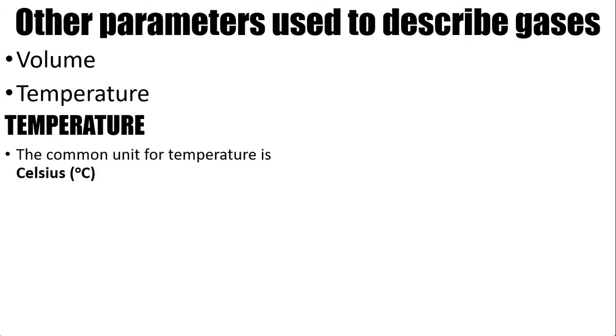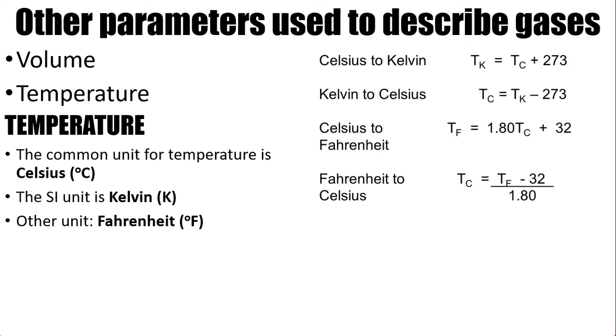Now let's go to temperature. The common unit for temperature is Celsius. We say 0 degrees Celsius, we say 25 degrees Celsius. But the SI unit is Kelvin. By the way, we don't say degree Kelvin, it's just Kelvin. The temperature that we're going to use in the next videos should be in Kelvin. Remember this, please. And the other unit is Fahrenheit, degree Fahrenheit. This is the formula in converting temperature to other units. We have Celsius to Kelvin, Kelvin to Celsius, Celsius to Fahrenheit, Fahrenheit to Celsius. The most common are Celsius to Kelvin and Kelvin to Celsius.